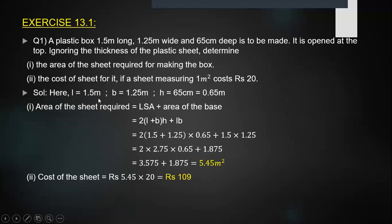So I'm taking l = 1.5m, b = 1.25m, and h = 65cm = 0.65m. What is the reason behind converting the units into meters? The reason is that the cost is given per meter square. If we are able to work out the area in meters square, it's going to be very easy to multiply and work out the cost.